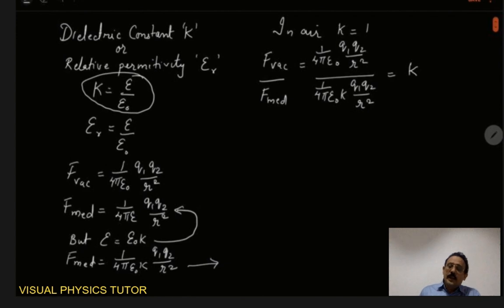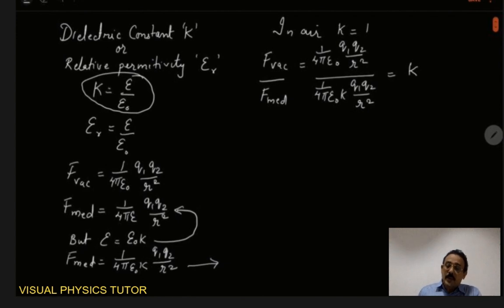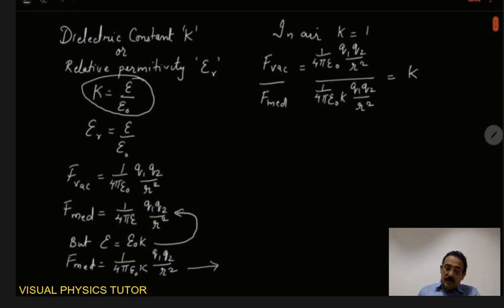So now we can define dielectric constant. The dielectric constant of a medium is the ratio of the force between two charges placed in vacuum to the force existing between the same charges placed at the same distance in a medium.